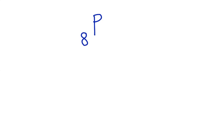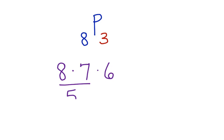What about three at a time? If three friends were going to ride at the same time, how many combinations could there be? We can use permutation notation to figure this out. We want the permutation of eight friends going three at a time. We start with eight times seven times six. We know that eight times seven is 56, and 56 times six is 336.